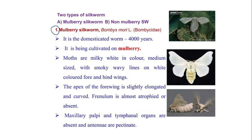First, we will discuss the mulberry silkworm. Its scientific name is Bombyx mori and it belongs to the family Bombycidae. The mulberry silkworm has been domesticated for more than four thousand years and is cultivated on mulberry leaves. The moths are milky white in color, medium-sized, with smoky wavy lines on the white-colored fore and hind wings.